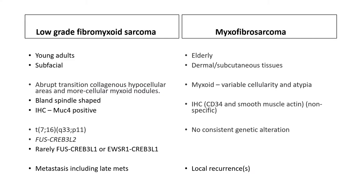This table compares key features of low-grade fibromyxoid sarcoma with key features of myxofibrosarcoma. Two highlights: first, low-grade fibromyxoid sarcoma is a tumor of young adults, while myxofibrosarcomas are generally a tumor of older individuals. Second, the location often helps — low-grade fibromyxoid sarcomas are beneath the fascia, while myxofibrosarcomas are invariably in the subcutaneous fat, above the fascia.